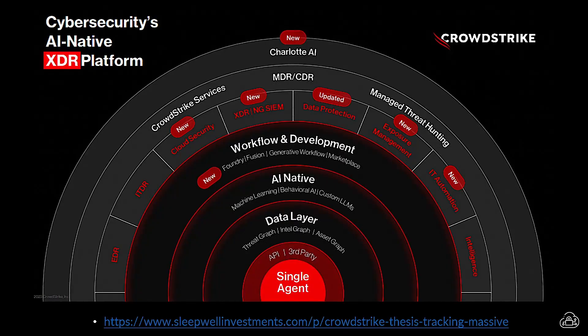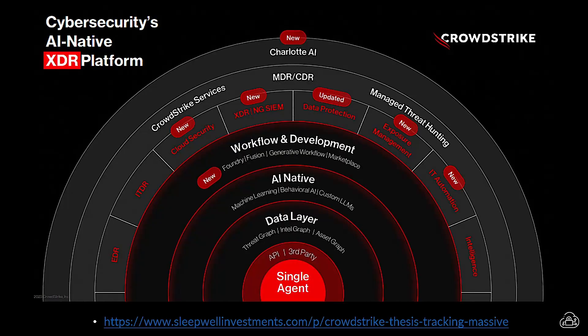Looking at this outer ring of their platform diagram, you can see how their portfolio has grown since they only had EDR. Now they talk about identity threat detection and response, cloud security with Kubernetes, Windows Server, cloud security posture management (CSPM), application security posture management (ASPM), CI/CD pipeline monitoring, as well as XDR and next-generation SIEM.